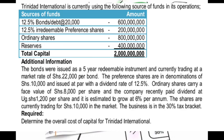In the additional information, the bonds were issued as a five-year redeemable instrument — n is five years — currently trading at a market rate of 22,000 per bond. The sources of funds show 12.5 percent bonds or debt at a face value of 20,000, and the amount is 600 million.